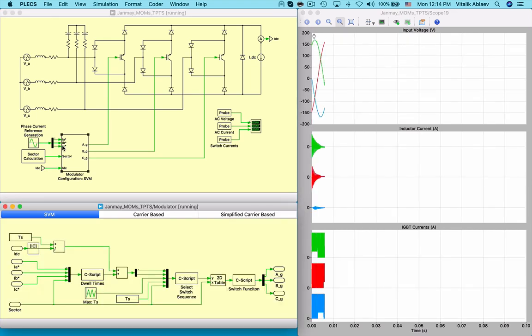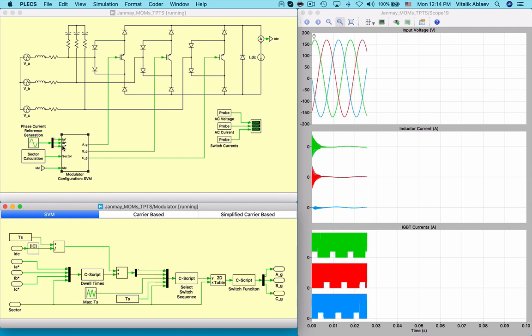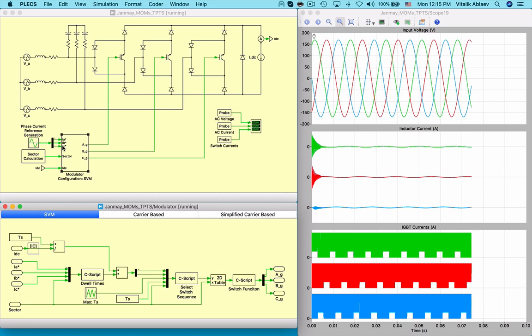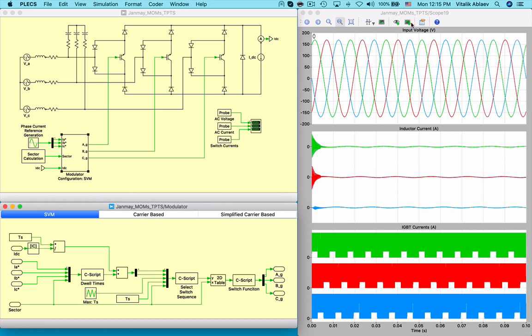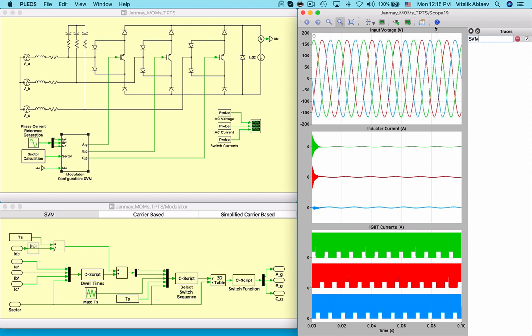Within the controller subsystem, there are three modulation scheme implementations: space vector, carrier-based, and a simplified carrier-based. For the space vector PWM, we calculate the dwell times based on which of the subsectors the line currents are in, from which we determine the appropriate switching combination.